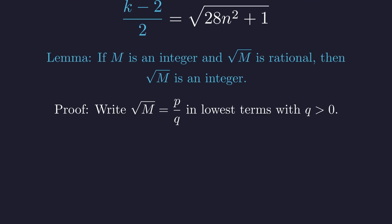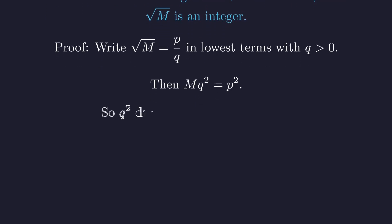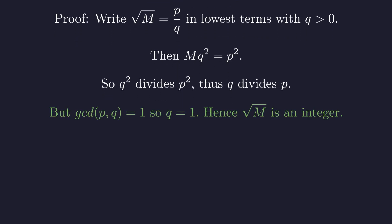To begin the proof, we represent the square root of m as a fraction p over q, which is in lowest terms. This means p and q share no common factors. Squaring both sides gives m times q² equals p². This implies that q² must divide p². A key property of prime factorization means that q must therefore divide p. However, our initial assumption was that p and q are coprime. The only way q can divide p under this condition is if q equals 1. This proves the lemma.